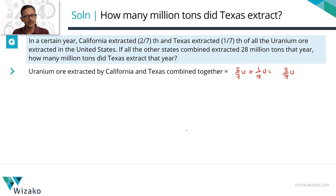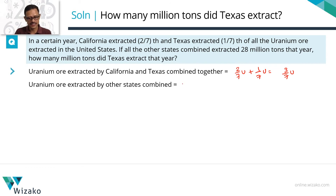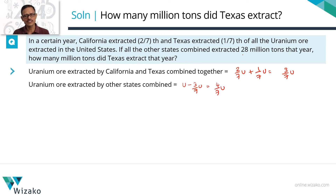So in terms of U, what fraction would have been extracted by all the other states? All the other states would have extracted U — which is the total quantity — minus the fraction extracted by these two states, which results in four sevenths of U. The number of tons extracted by all other states is equal to 28.